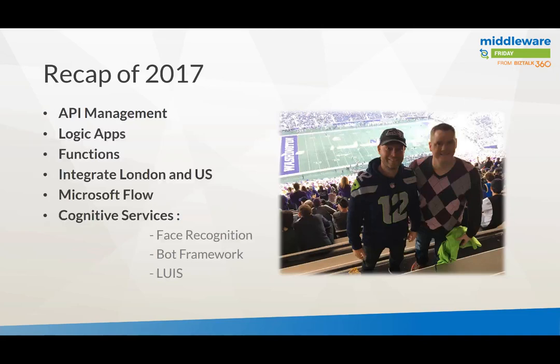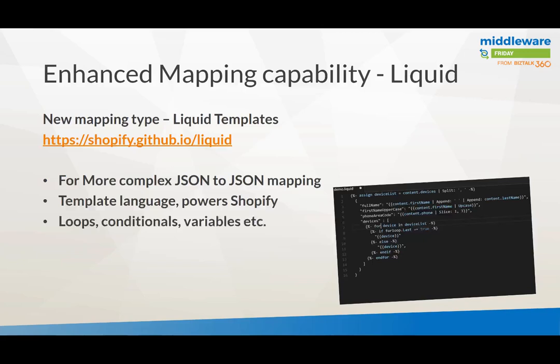Now let's go into our topic, which is this new advanced capability called Liquid. This capability is based on open source — you can find it on Shopify. It's kind of an expression type of language, similar to XSLT, which you can apply on JSON if you want to do JSON-to-JSON mapping. This was announced by John Fancy during Integrate US in November last year at Microsoft's campus. It's a template language, and you can find it at the URL shown here.